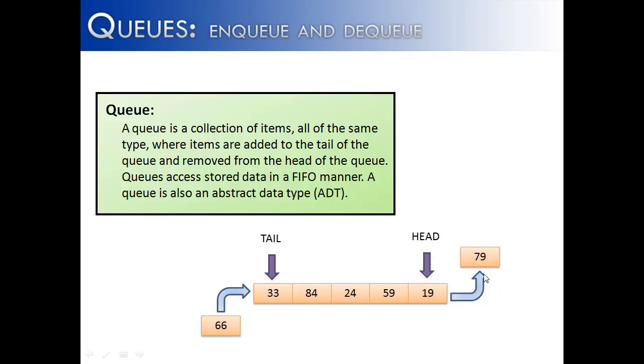So 19 would be the first removed, or actually if 79 were sitting here, 79 would be the first removed. And if you wanted to get onto the line like 66 does, he has to go in and become the tail of the line.